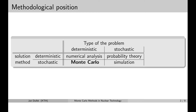The methods that we use to solve problems can also be divided into deterministic methods and stochastic methods. The deterministic methods provide solutions that do not have any kind of uncertainties, while the stochastic methods provide solutions that have uncertainties, in the form of a mean value and statistical deviation. Very commonly we apply deterministic methods on deterministic problems — in that case we are using the tools provided by numerical analysis. We can also apply deterministic methods on stochastic problems, in which case we have to use probability theory.